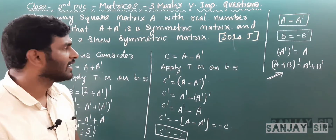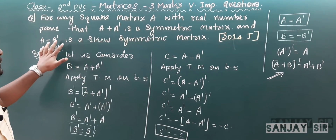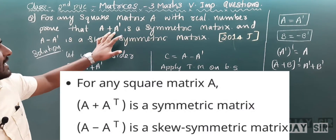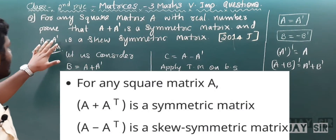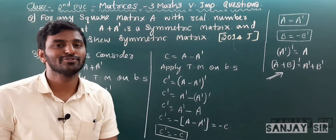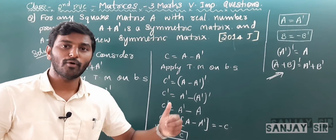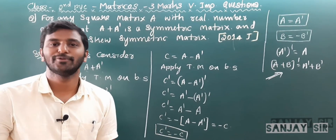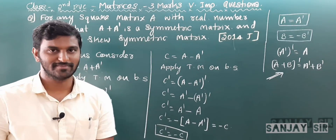Hence we conclude: A + A' is a symmetric matrix and A − A' is a skew-symmetric matrix. Pause the video and note it down. We will move on to the next question.